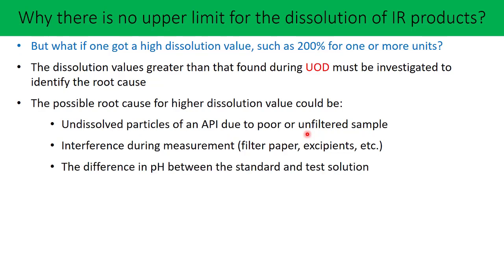Another potential cause is a difference in pH between the standard preparation and the test preparation. It has been observed that pH can influence the response when using UV absorption techniques — whether HPLC with a UV detector or UV spectroscopy. If the pH is not similar between standard and test, and the drug substance gives a different response at different pH values, you may get a different dissolution result for the test compared to the standard, because there is a different response altogether — higher or lower is also possible.